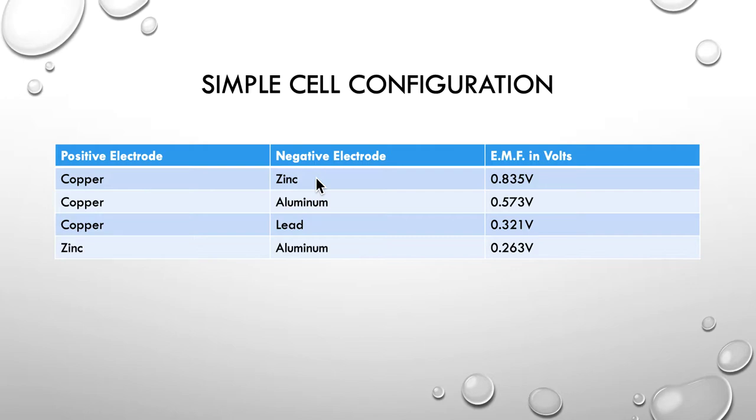So let's put those all in a table now and you can see that the copper zinc is the best at 0.835. The copper aluminium fair drop in that then copper lead drop substantially again and then finally the zinc aluminium the worst case scenario.